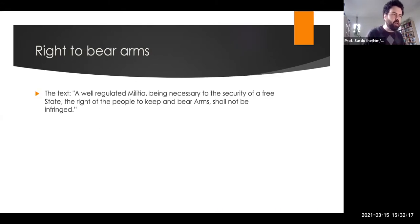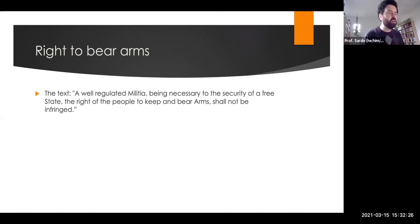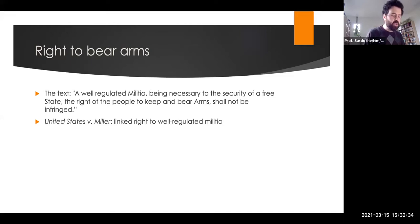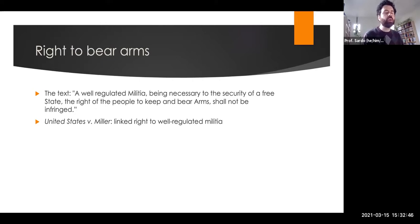The Second Amendment includes the protection of the right to bear arms: 'a well-regulated militia being necessary to the security of a free state, the right of the people to keep and bear arms shall not be infringed.' There's a lot of debate over what this text means. Originally, in United States v. Miller, the right to own firearms was linked to the well-regulated militia — it was not a universal right to own a firearm, but a narrowly constructed right based on membership and participation in a well-regulated militia.